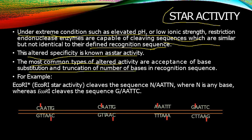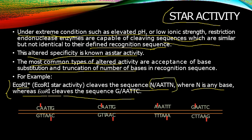For example, EcoRI undergoes star activity, cleaving a sequence where N is any base, whereas normally EcoRI cleaves a specific sequence. So under extreme conditions they cleave certain wrong sequences which seem pretty much identical to their recognition sequences. This is the concept known as star activity.